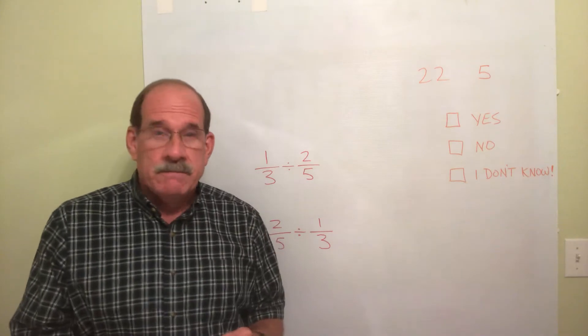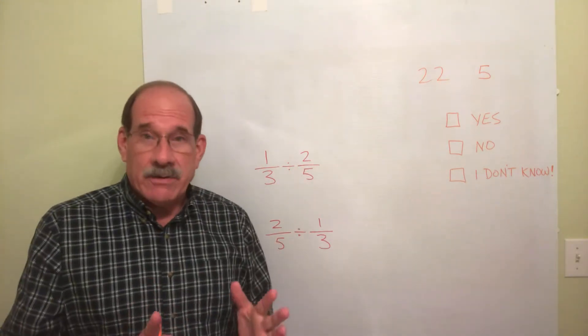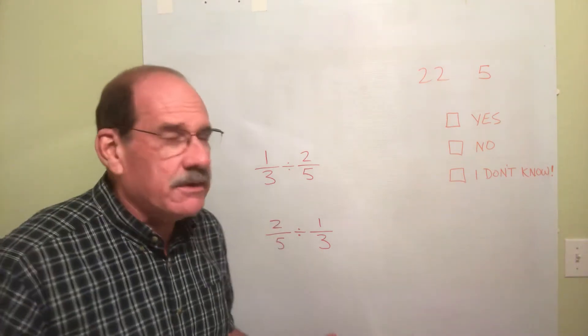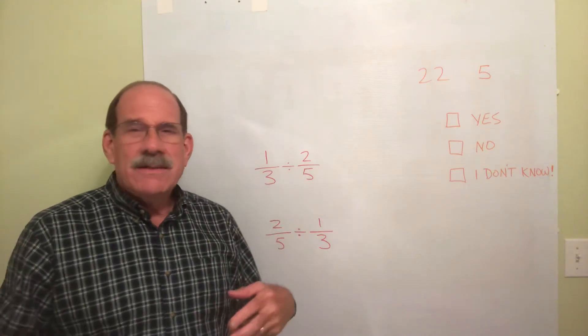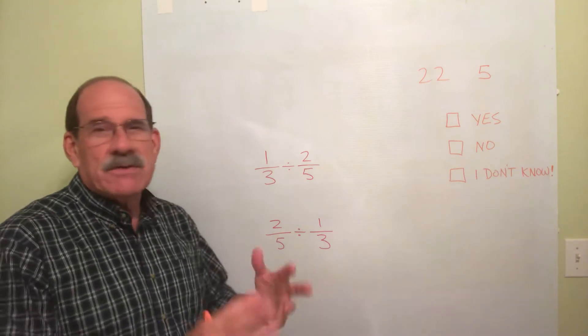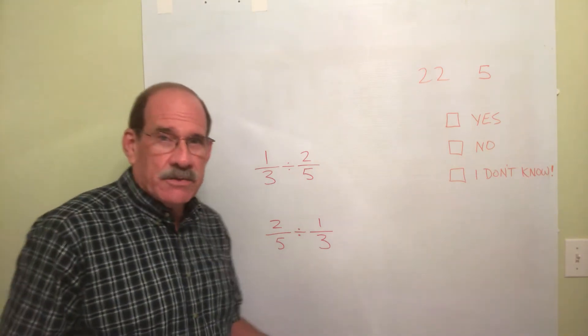So now we're dividing fractions. We have 1 third divided by 2 fifths. Yes, the order matters. Now, you learned somewhere, I guess, in 4th grade or somewhere back there. One of those is the divisor. One is the dividend. One is the whatever. I mean, all these crazy words and you forgot all that. It doesn't matter. So let's make it real simple.